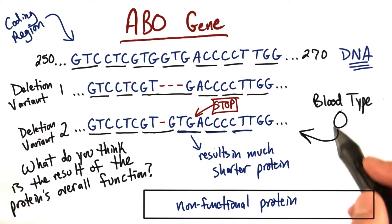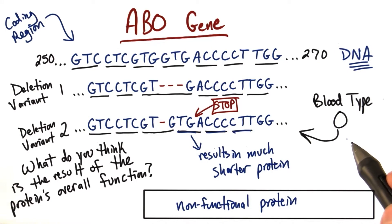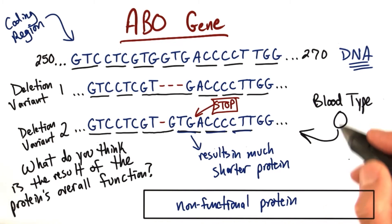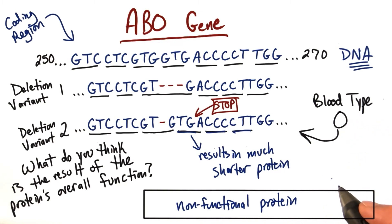Blood type O — the reason it's letter O is that the O represents the absence of a molecule that would normally be added by a functioning protein. So the ABO protein would normally add an antigen to the red blood cells, but because it's non-functional, nothing gets added, and so we call that blood type O.